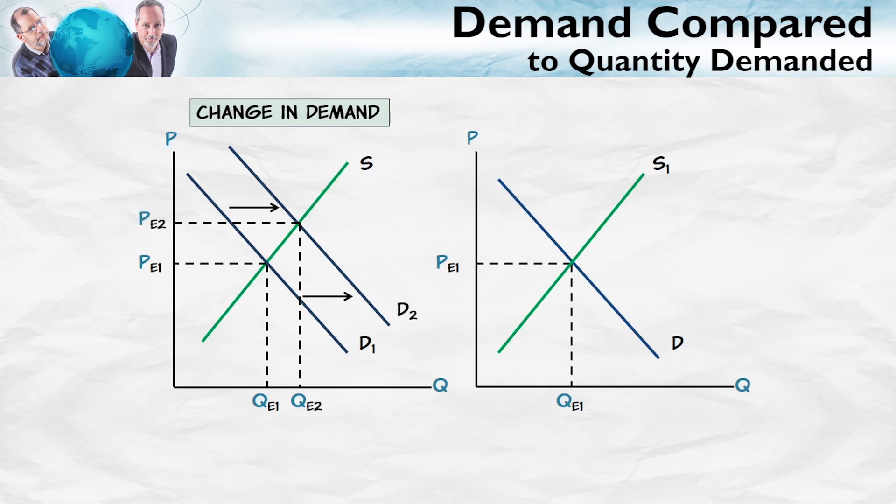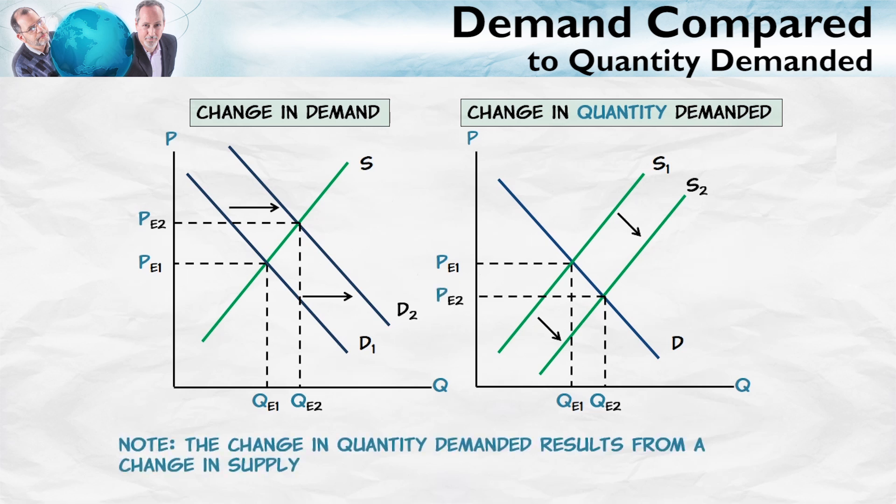Now let's look at a change in the quantity demanded on the right. Suppose, for example, that the supply increases. Now notice that an increased supply increases the quantity demanded from QE1 to QE2. That's an increase in the quantity demanded.